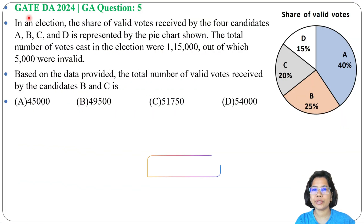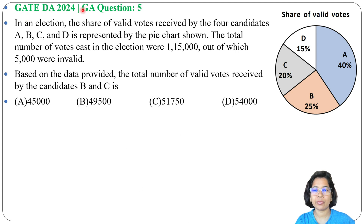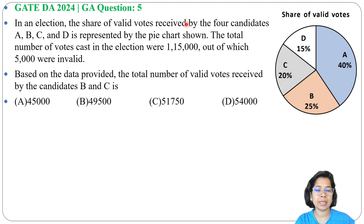Let's solve one previous question of general aptitude. This question was asked in GATE DA 2024, GA question number 5. In an election, the share of valid votes received by the 4 candidates A, B, C and D is represented by the pie chart shown.